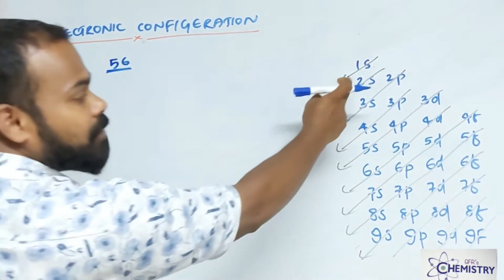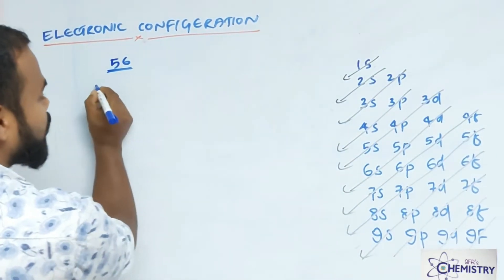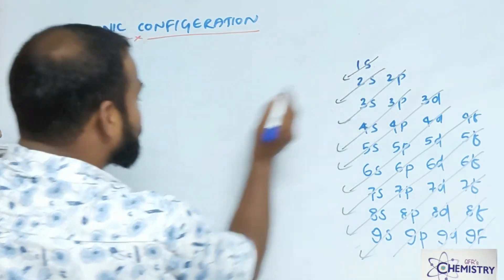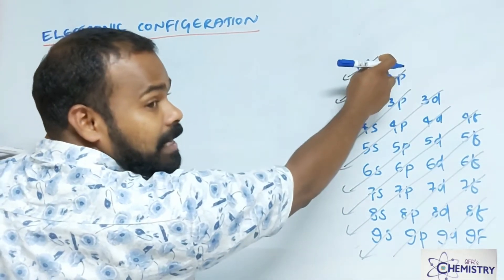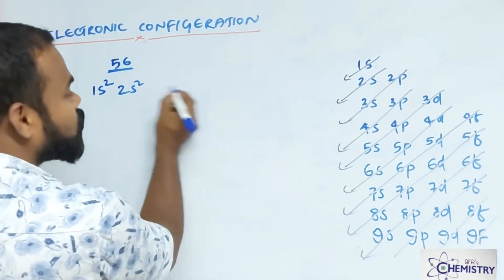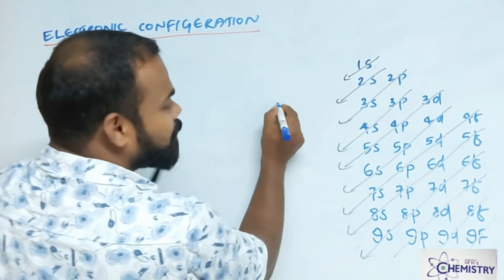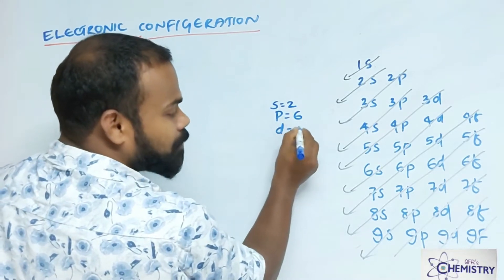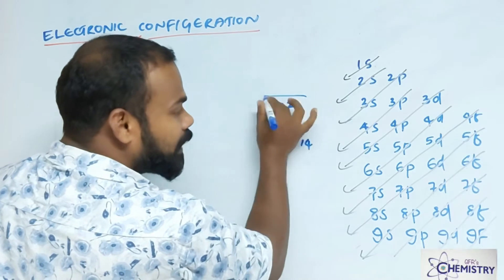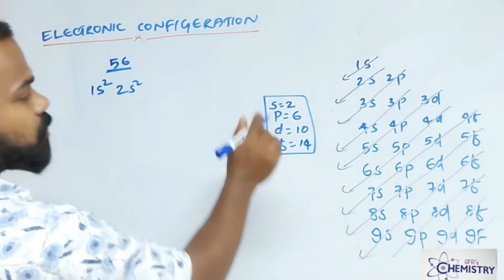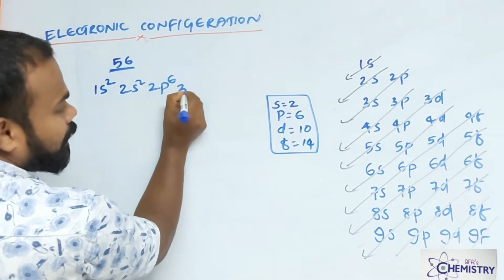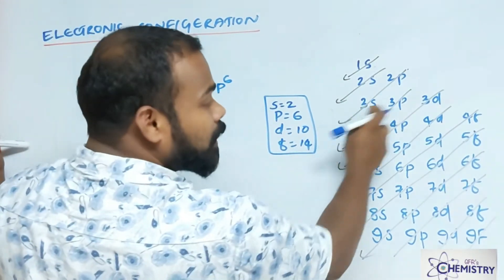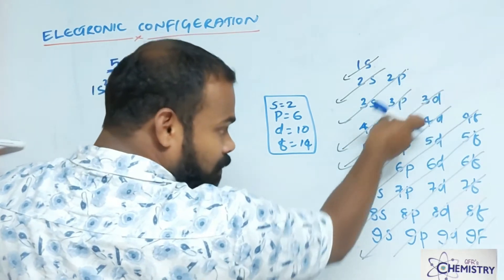We know 1s, 2s and all subshells. First I write 1s², then 2s². Along with this line: 1s² is completed, then next 2s² completed. Maximum capacity: s = 2, p = 6, d = 10, f = 14. Then 2s², then 2p⁶, then 3s², then 3p⁶.